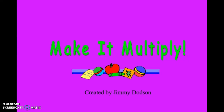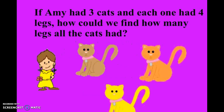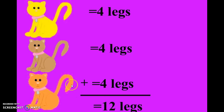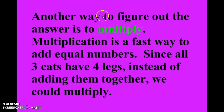Hello class, today we are going to learn how to multiply. If Amy had three cats and each one of them had four legs, how could we find how many legs all of the cats had? So you have three cats, each with four legs, so we're going to add four three times — because three cats, four legs — that equals twelve legs.